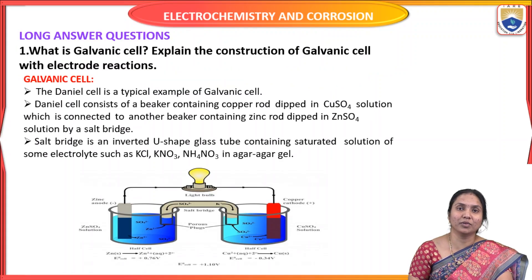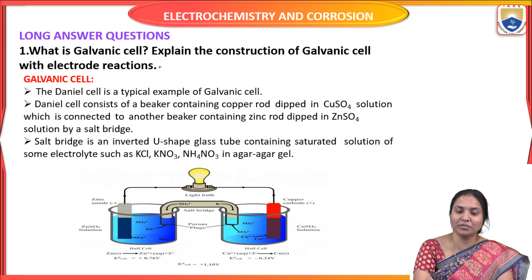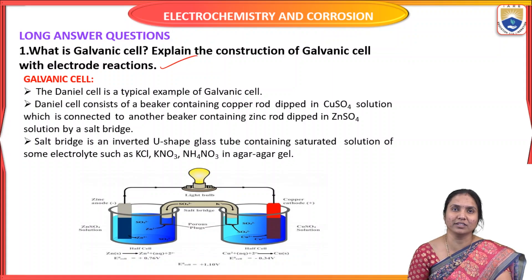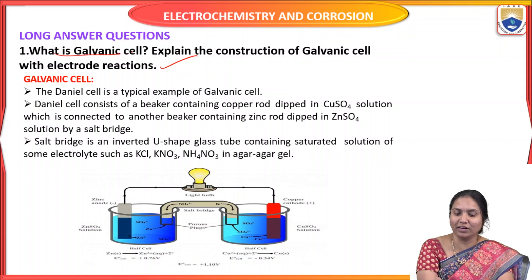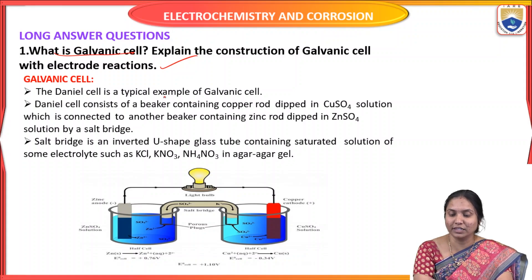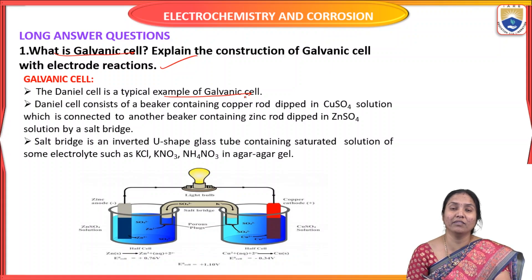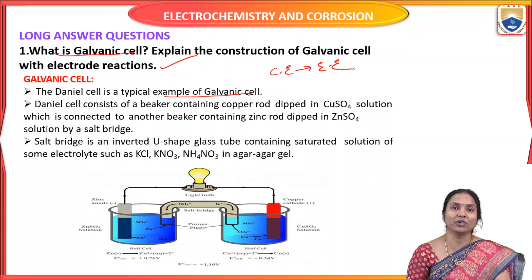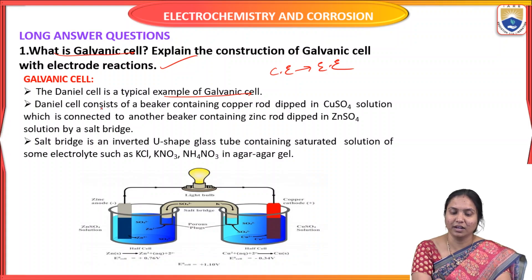Here we discuss long answer questions. The first electrochemistry question is: what is a galvanic cell? Explain the construction of a galvanic cell with the electrode reactions. A Daniel cell is a typical example of a galvanic cell. A galvanic cell is an electrochemical cell which converts chemical energy into electrical energy.